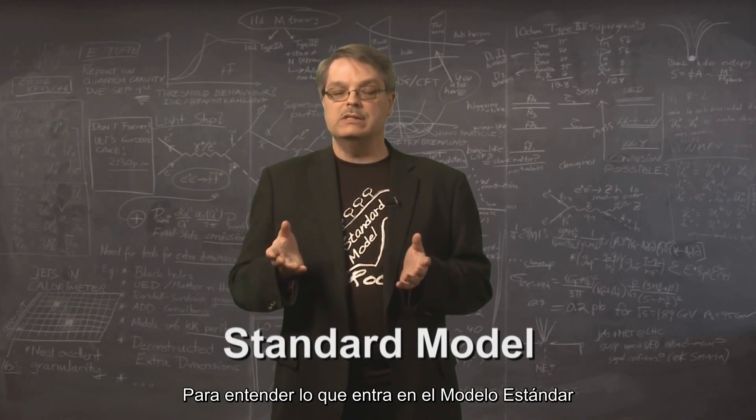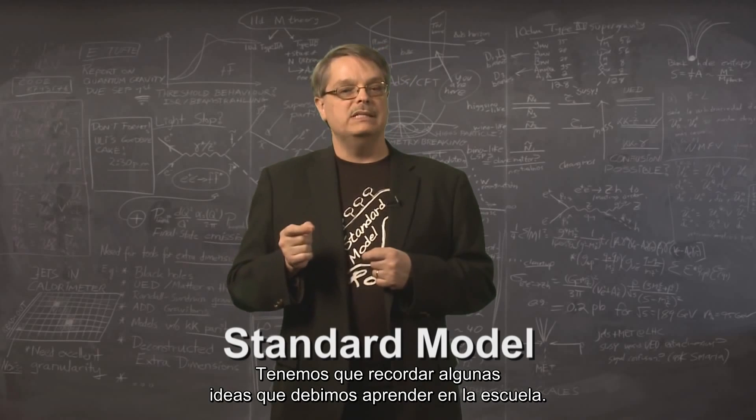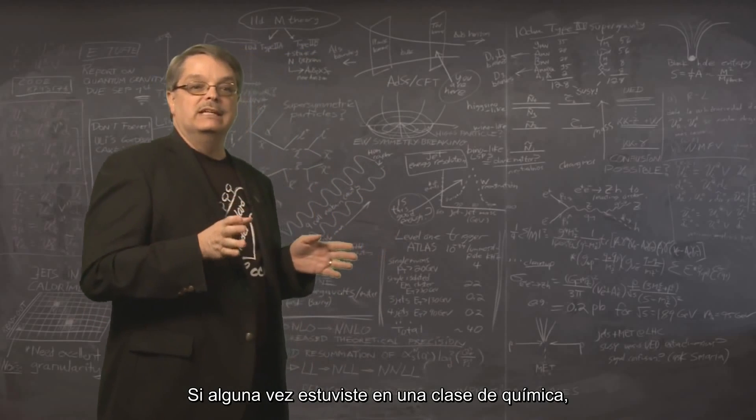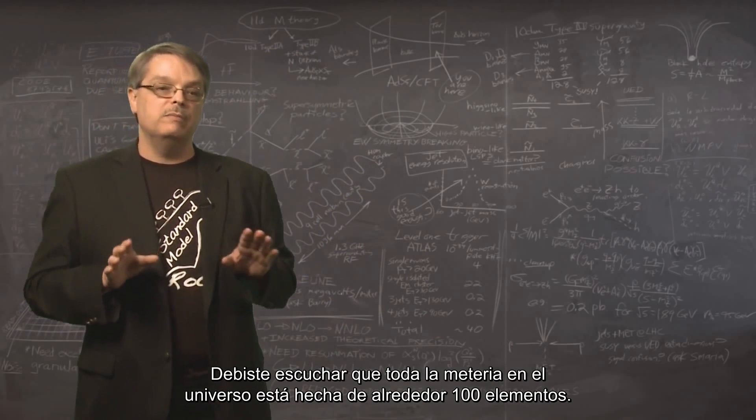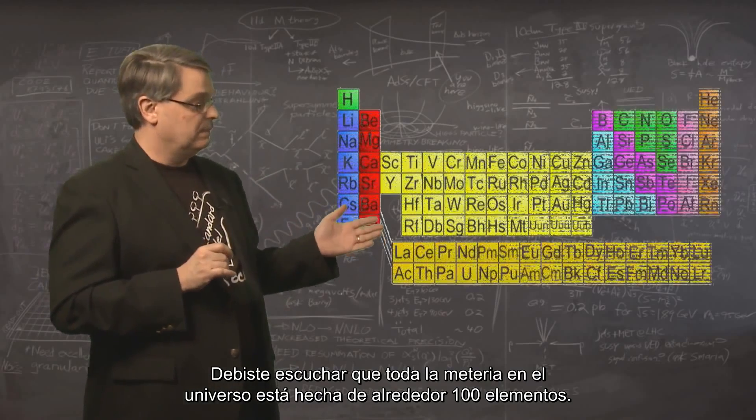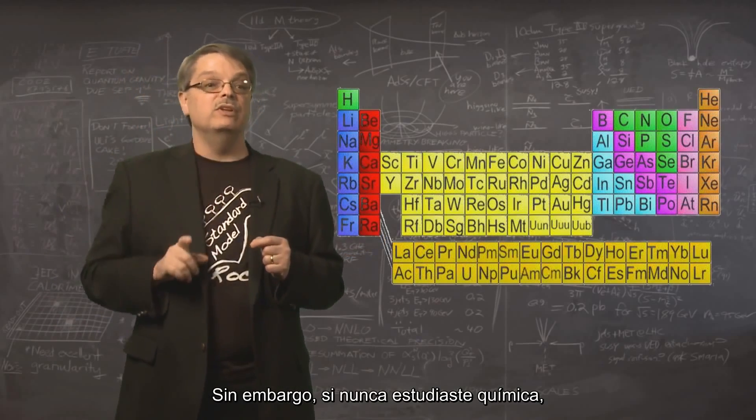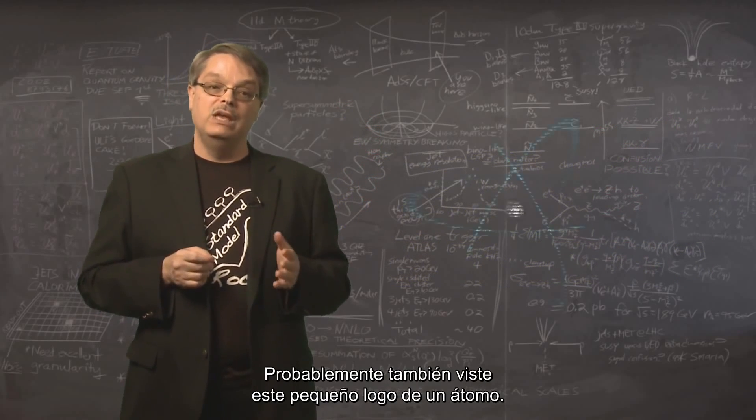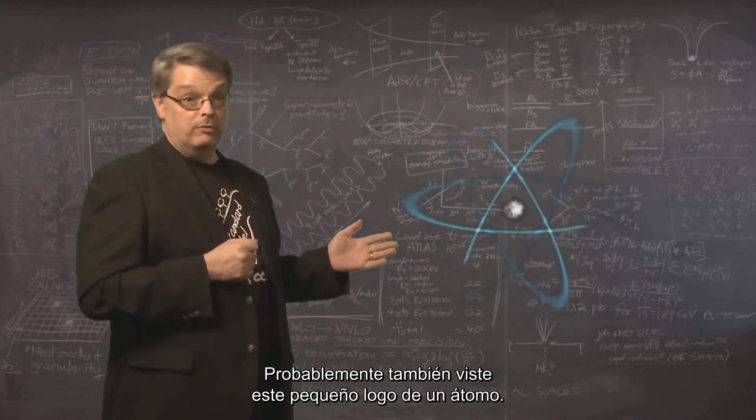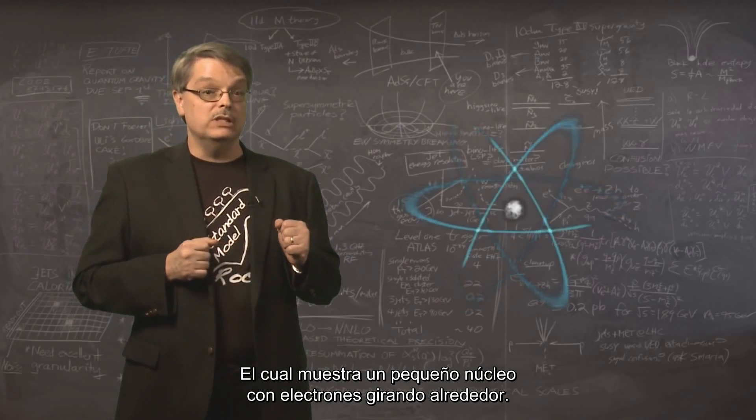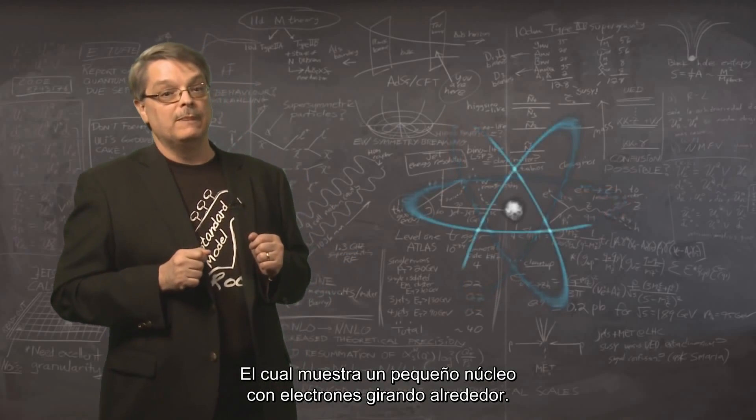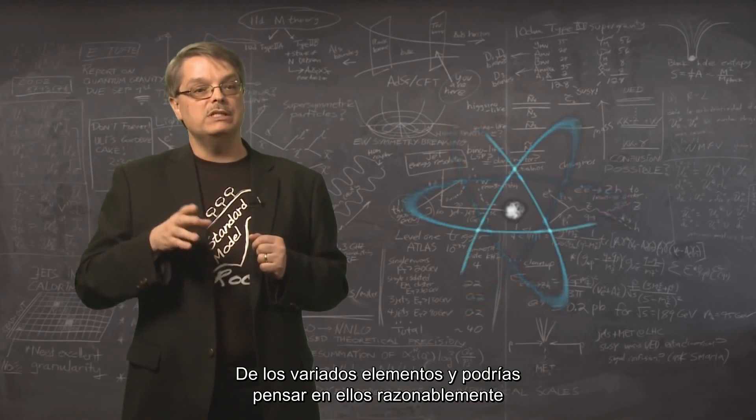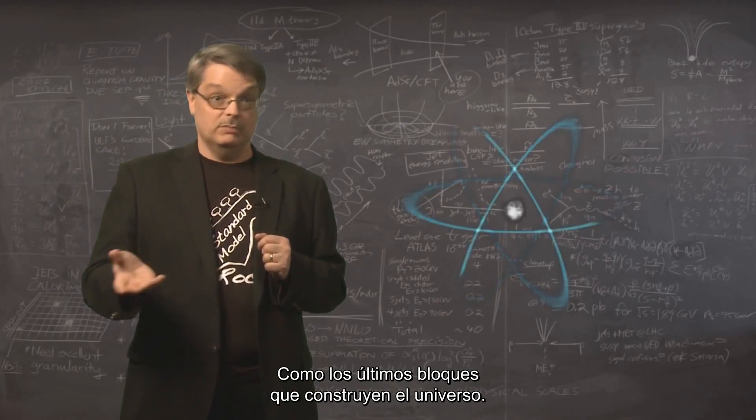To understand what goes into the Standard Model, we need to recall some ideas we might have learned from school. If you've ever taken a chemistry class, you've heard that all of the matter of the universe is made of about 100 elements. However, even if you've never studied chemistry, you've probably heard that all matter is made of atoms. You've even probably seen this little logo for an atom, which shows a tiny nucleus with electrons swirling around it. Atoms like these are the smallest examples of the various elements, and you could reasonably think of them as the universe's ultimate building blocks.